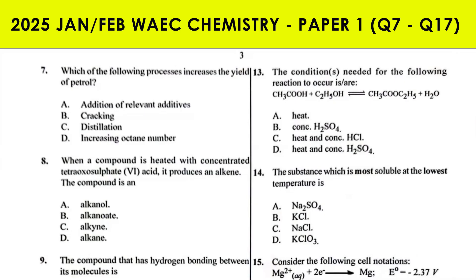The longer chain and less useful hydrocarbons are always converted to more useful and shorter chain hydrocarbons like petrol through the process of cracking, especially through catalytic cracking. So that's why B is the answer.